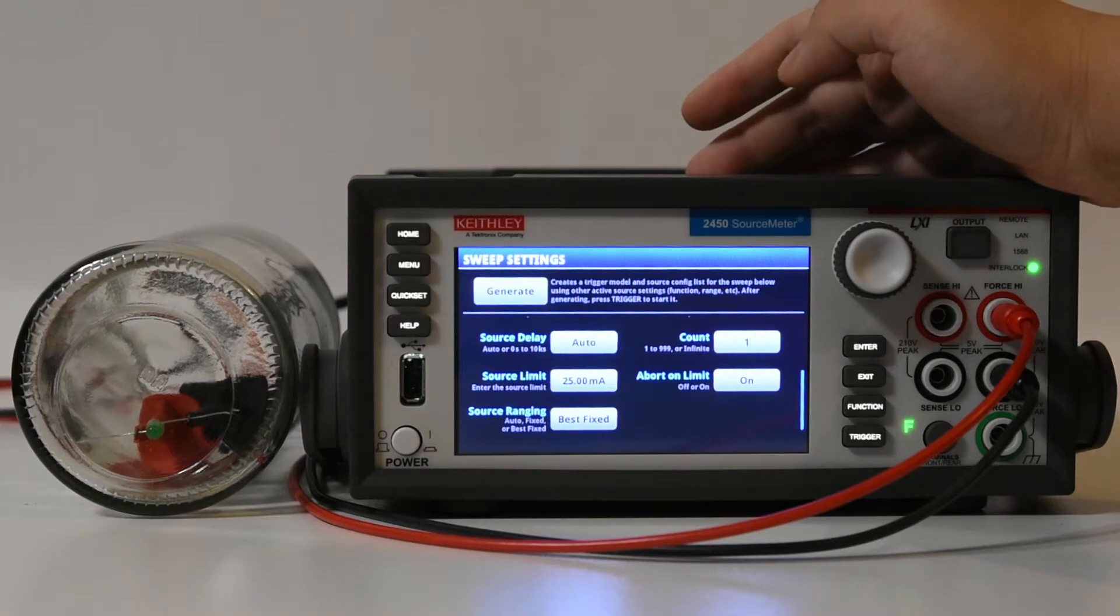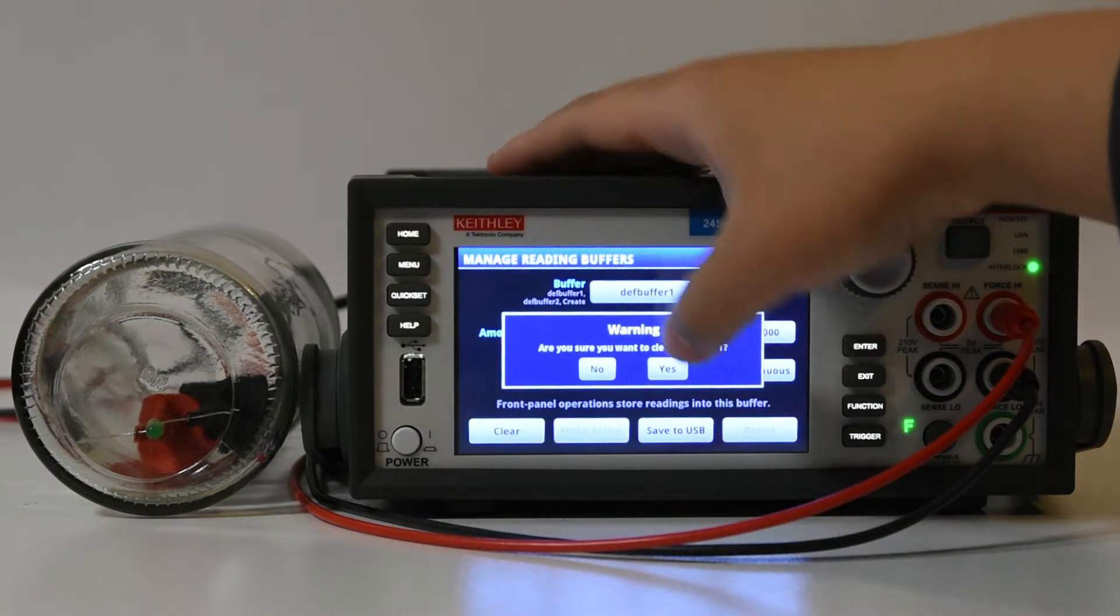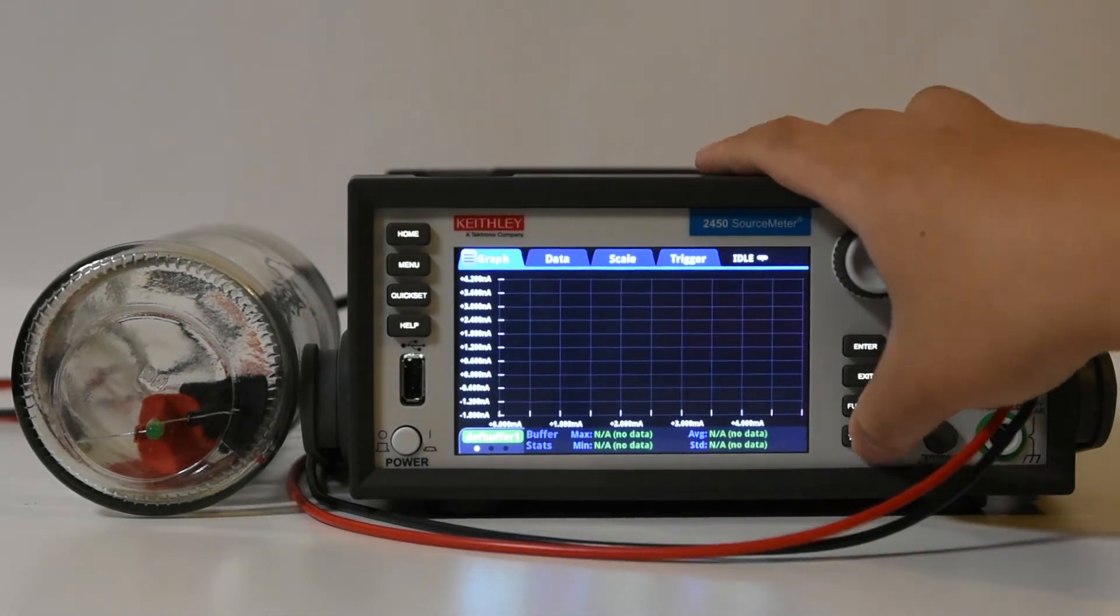The next step is to clear the reading buffers so there aren't any stray readings. Then we can proceed to watch the sweep in action by heading to the graph module and hitting the trigger key to begin.